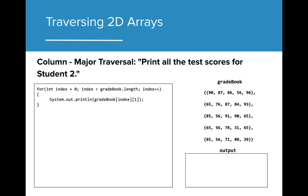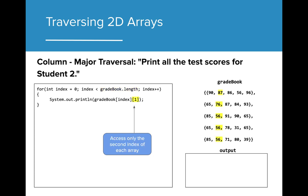For column major traversal, the algorithm looks very similar. Instead of traversing the length of a single array, we need to traverse the length of the entire gradebook, ensuring that each array within the 2D array gets searched. Additionally, the constant in the print statement swaps positions. Because we only wanted to access data for the second student, the constant that needs to be set is the column index value. This ensures that the value stored at index 1 in each array will be accessed. The for loop iterates from the array at index 0 to the final array in the 2D array, accessing index 1 in each array. The output reflects all values at index 1 from all arrays in the 2D array.